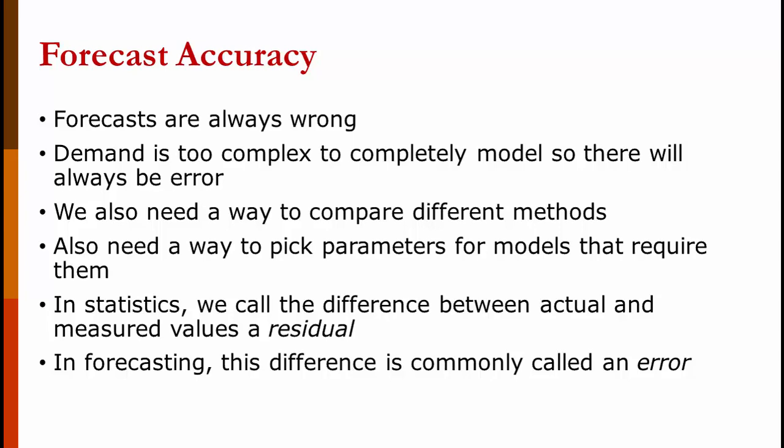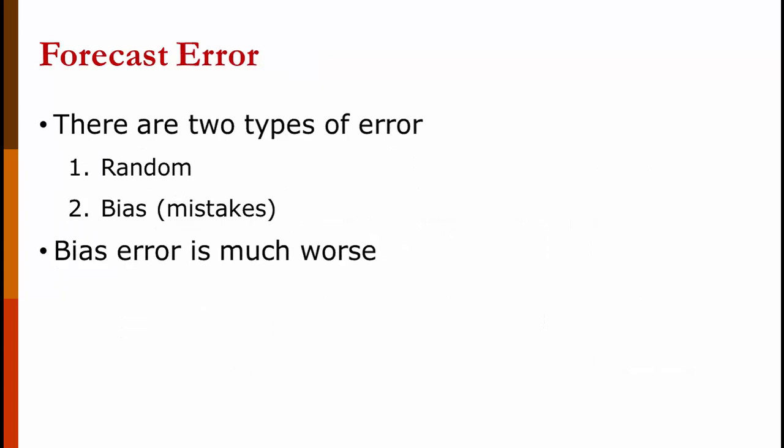In statistics, we call the difference between actual and measured values a residual. In forecasting, we call them an error. There are two types of errors, random and bias. You can think about bias as mistakes. We're always going to have random error. That's the definition of random. You can't forecast it. Bias is much worse. You shouldn't have bias in your forecast.